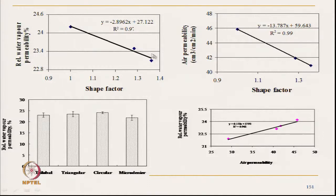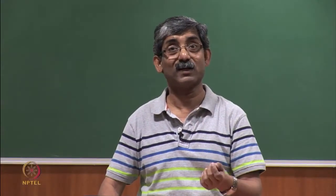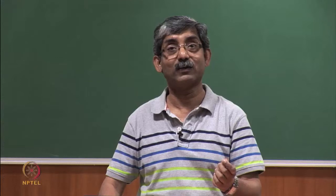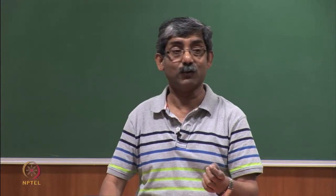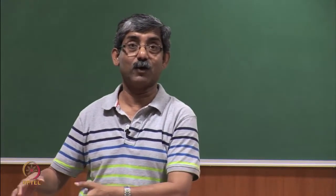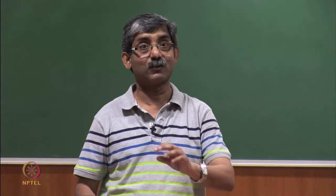The moisture transmission here is mainly through diffusion, because the fibre being used is polyester — a shaped polyester filament. Here, non-Fickian diffusion is not present; only Fickian diffusion takes place. That is why moisture transmission is directly related with air permeability — moisture transmission takes place through the air pocket.